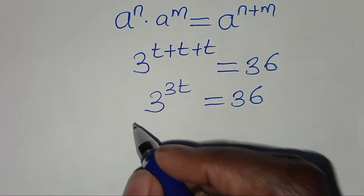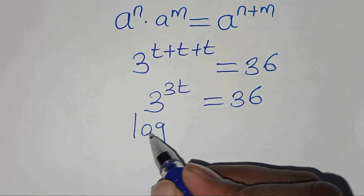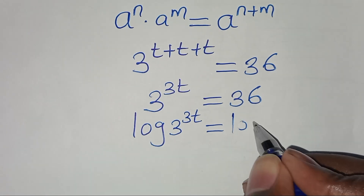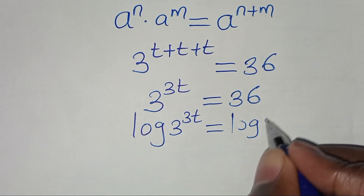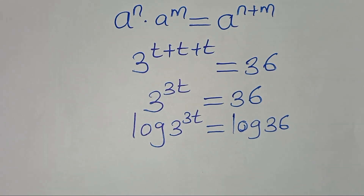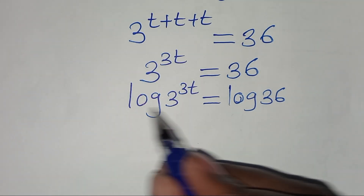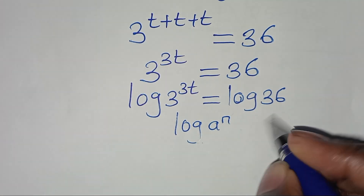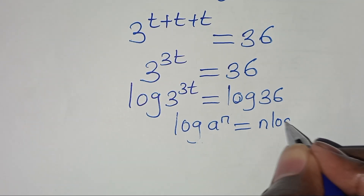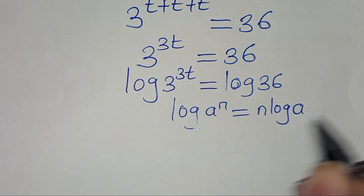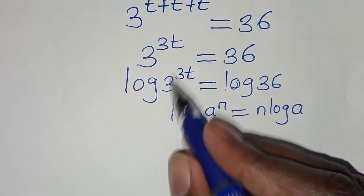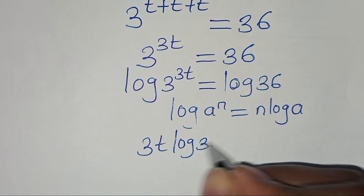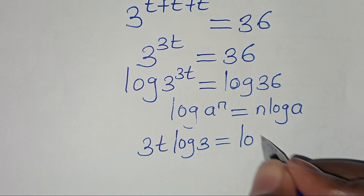To solve for t here, we introduce logarithm on both sides, so that we have log of 3 to power 3t, and this is equal to log 36. The next step is that log 3 to power 3t is in the form of log a to power n, which we can express as n log a. Applying this power rule property, then log 3 to power 3t becomes 3t log 3, and this is equal to log 36.